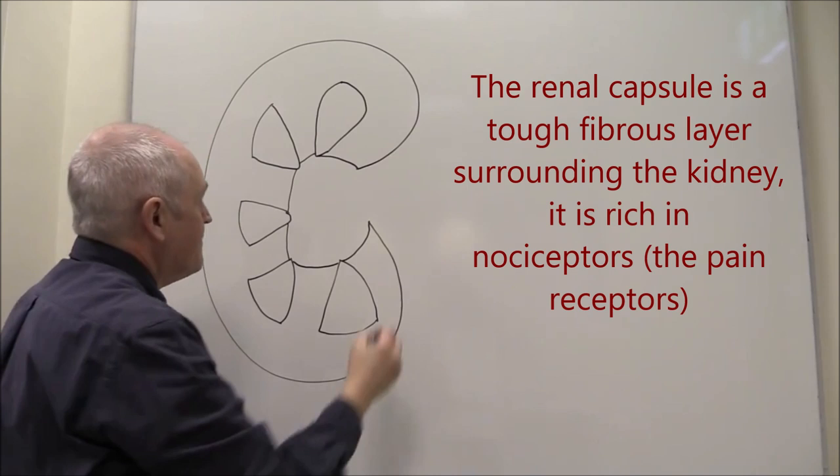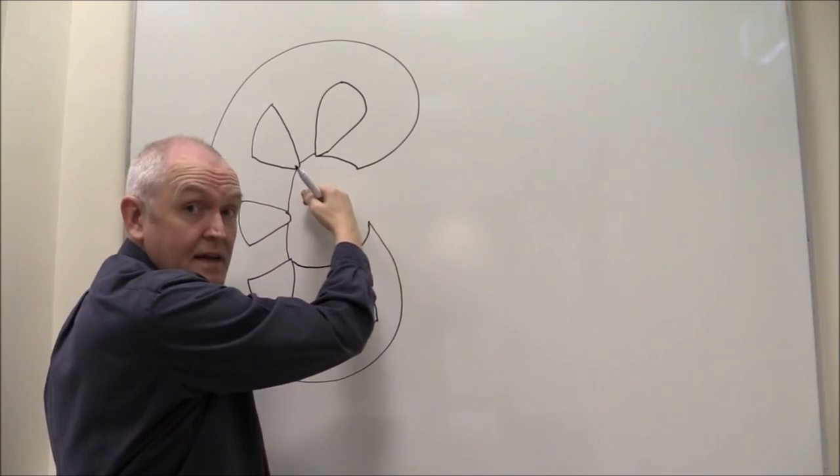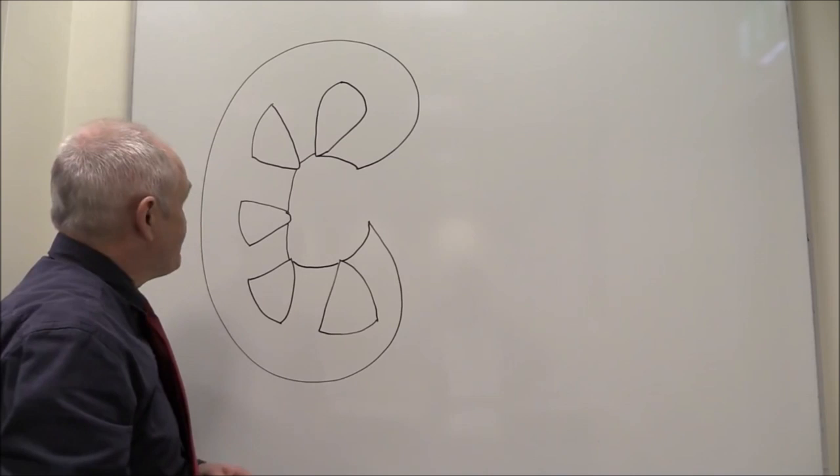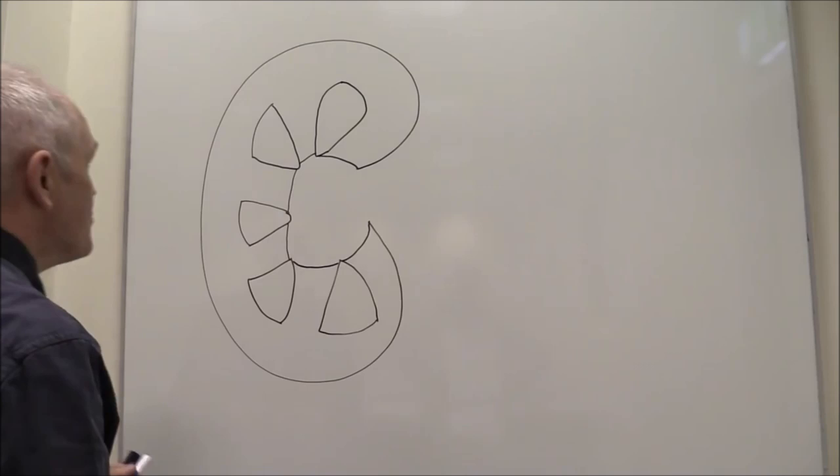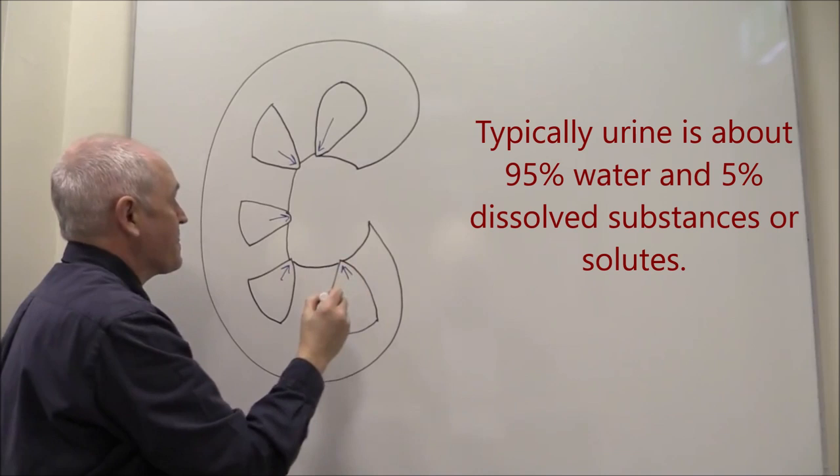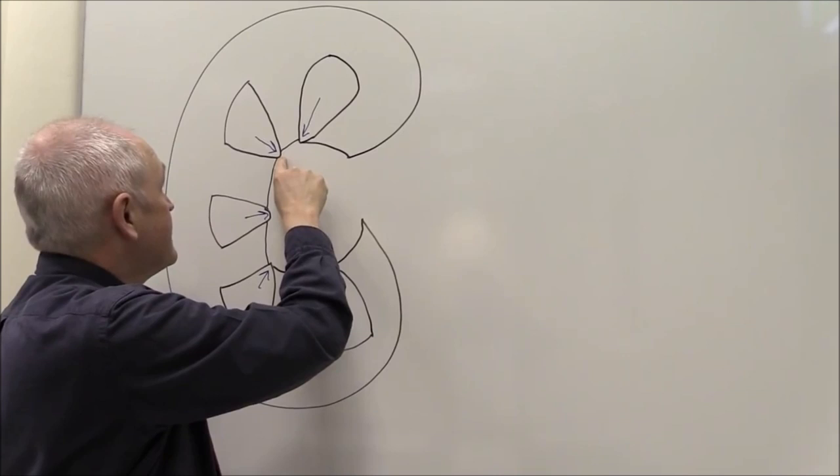And this area here, where things go in and out of the kidney, is called the renal hilum. Now the urine, as it's produced, actually passes down through the medullary pyramids. So as urine is produced it's going to go down the medullary pyramids and it's going to go towards the end of the medullary pyramid here.